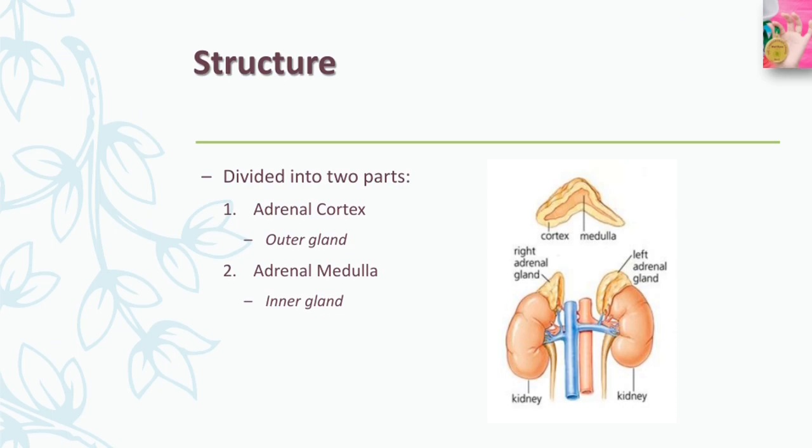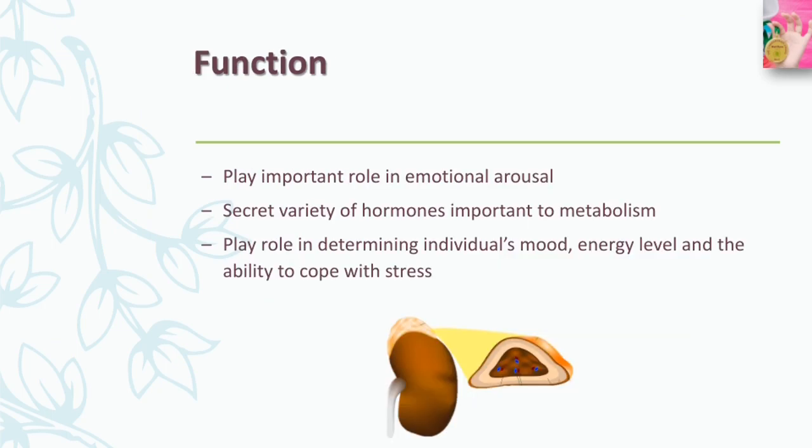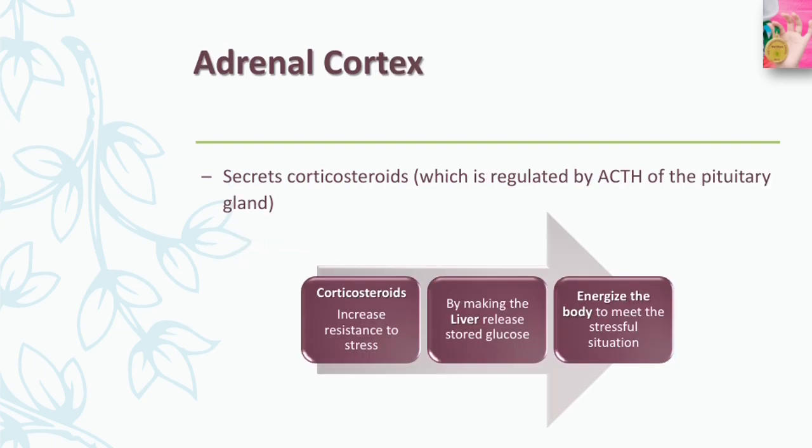Adrenal glands can be divided into two parts: the adrenal cortex and the adrenal medulla. The adrenal cortex is the outer part and the adrenal medulla is the inner part. Adrenal glands play an important role in emotional arousal and secrete a variety of hormones important to metabolism, determining an individual's mood, energy level, and ability to cope with stress.